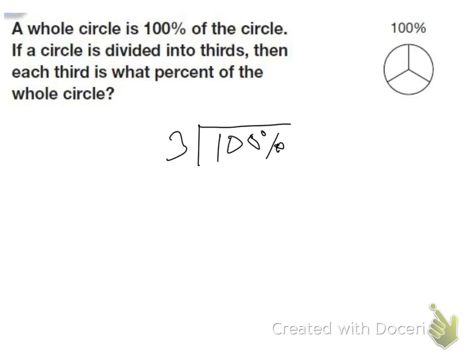So we go 10 divided by 3 is 3. 3 times 3 is 9. Subtract. 10 minus 9 is 1. Bring down the 0. 10 divided by 3 is 3. 3 times 3 is 9. Subtract. And we have 1 left over.